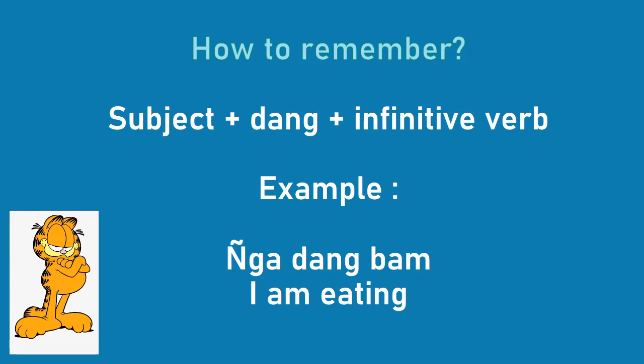Now, how to remember. This formula will help you to remember the Khasi Present Continuous Tense. There is a subject, plus the word DANG — which represents the Khasi Present Continuous Tense — plus an infinitive verb. For example, 'Nga DANG BAM' means 'I am eating.' If you say 'I eat' in Khasi, it will simply be 'Nga BAM.' You must be careful that in Khasi we do not have a literal translation of the auxiliary verbs like AM, IS, ARE.